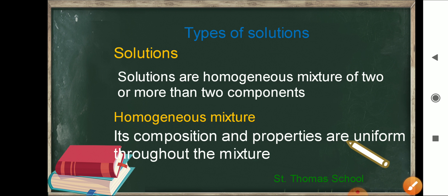Now when we talk about homogeneous solutions, the solution can be not only liquid — it can be a solid solution or a gas solution too. So a homogeneous mixture can be of solid, liquid, or gas. Its composition and properties are uniform throughout the mixture.